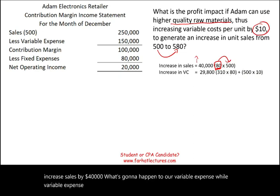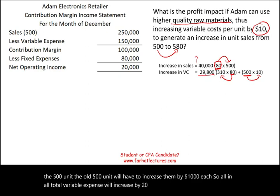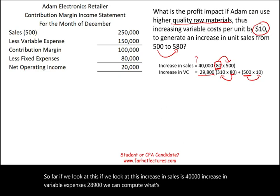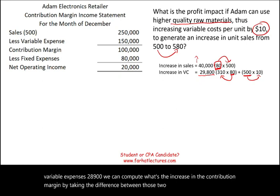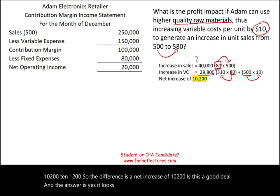Variable expense increases in two ways: the additional 80 units × $310, plus the existing 500 units each increase by $10. All in all, total variable expense increases by $29,800. The increase in sales is $40,000 and the increase in variable expense is $29,800, so the increase in contribution margin is $10,200. That's a net increase of $10,200.